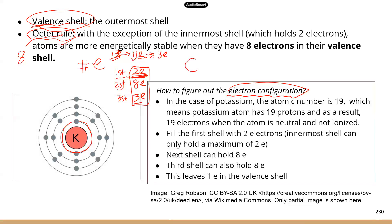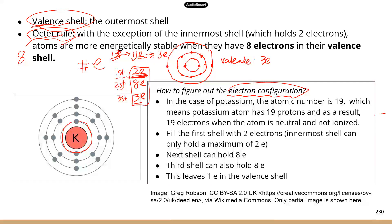For the first shell you have two, the next shell you have eight, and then for the next shell you have three. So the valence shell is going to have three electrons. You can look at the example on the slide, which is potassium. That will give you another practice on assigning the electrons to the different shells.